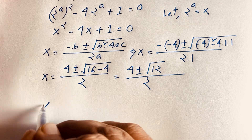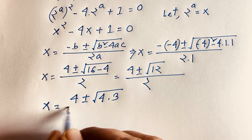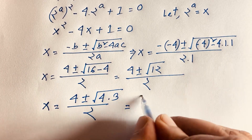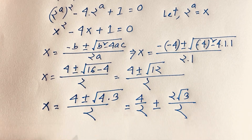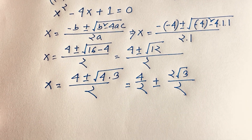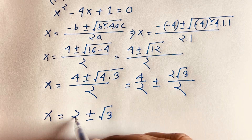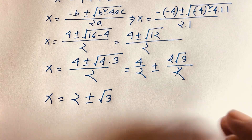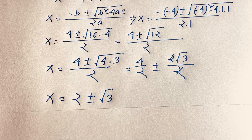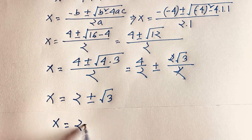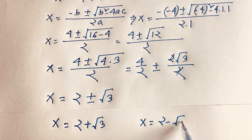We simplify √12 as 2√3. So x = [4 ± 2√3] / 2, which gives x = 2 ± √3. Therefore we have two solutions: x = 2 + √3 and x = 2 − √3.